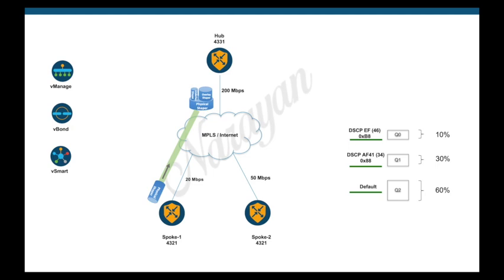These spokes will advertise the downstream bandwidth dynamically, and the hub will shape traffic accordingly towards the spoke. Within this parent shaper, the three-class-based QoS that we have configured will provide the necessary priority to application traffic as defined in a hierarchical manner.